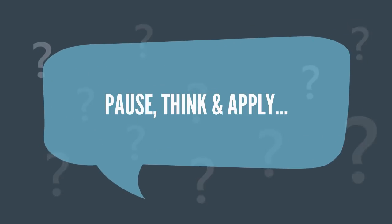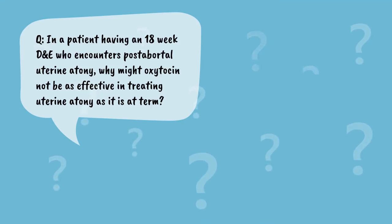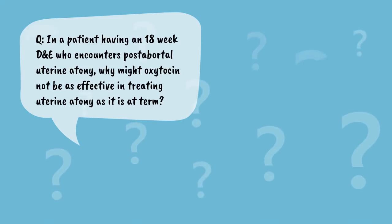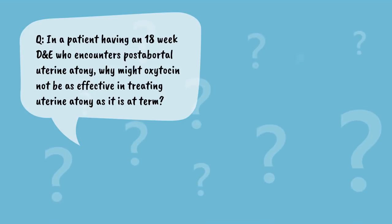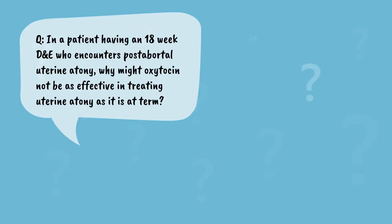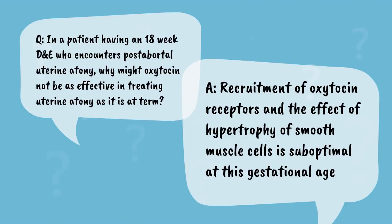Let's pause, think, and apply. In a patient having an 18-week D&E who encounters post-abortal uterine atony, why might oxytocin not be as effective as it is at term? Recruitment of oxytocin receptors and the effect of hypertrophy on smooth muscle cells is suboptimal at this gestational age.